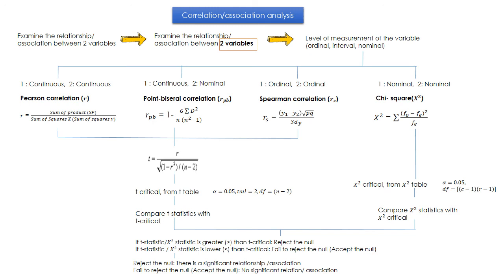The take-home message is: when thinking about correlation analysis, first consider your purpose — if you want to examine a relationship, then identify how many variables you have. With two variables, ask what type they are: both continuous, one continuous and one nominal, both ordinal, or both nominal. That determines the formula to use and how to interpret the result. In the following videos, I will show you how to compute point-biserial and Spearman correlation by hand. Hope this is clear. Thank you.